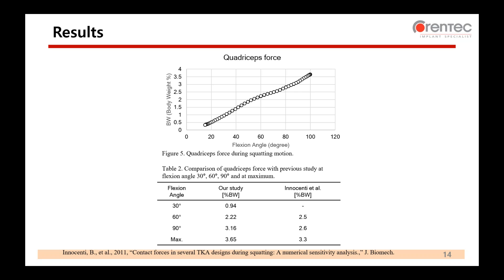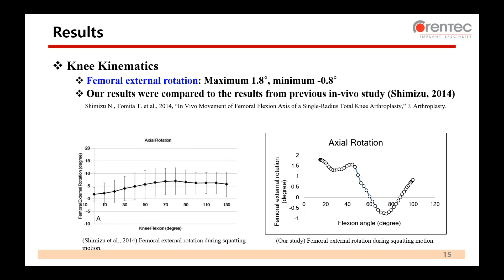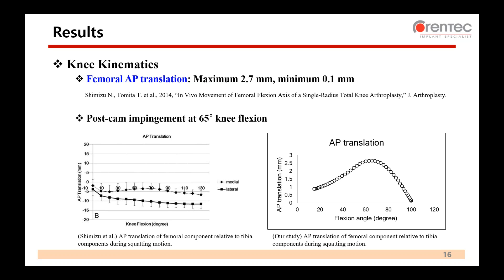This slide shows axial rotation results. The femoral component internally rotated until 0.8 degrees and then externally rotated to a maximum of 1.8 degrees. Our results were compared to results from a previous in vivo study of PS-type total knee arthroplasty. AP translation was maximum 2.7 millimeters and minimum 0.1 millimeter during squatting simulation. The femoral component translated anteriorly until 65 degrees of knee flexion and translated posteriorly until maximum knee flexion. Post-cam impingement restricted the flexion and influenced posterior translation.